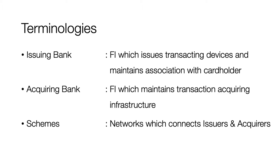The issuing bank is the one which offers a credit line to the customer and maintains association with them. An acquiring bank is a financial institution that maintains the relationship with the merchant. The acquiring institution issues and maintains the POS terminals and also does settlement with the merchant. Schemes are entities which interconnect issuers, acquirers, and various processors across the globe, forming a global network.